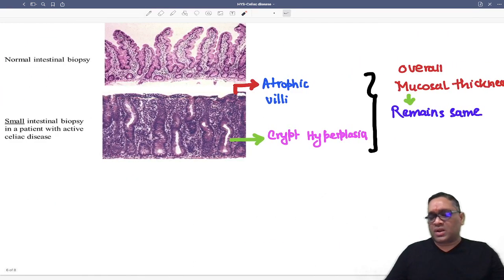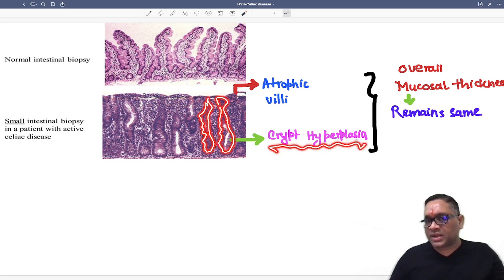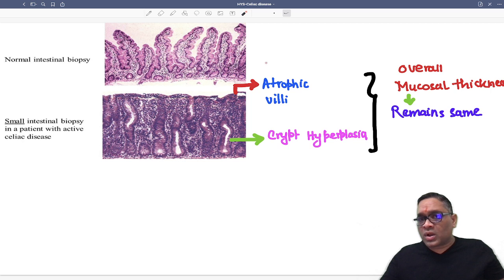On biopsy, what are we going to see? This is the normal villi. We can see the normal villi and there is a crypt. But in celiac disease patient, you can see villi is totally atrophic. There is an atrophic villi. But remember, the amount of atrophy we are seeing in the mucosa, same amount of cryptic hyperplasia is seen. Because of these two combinations, atrophy of the villi and cryptic hyperplasia, overall you can see the thickness of the mucosa is same.